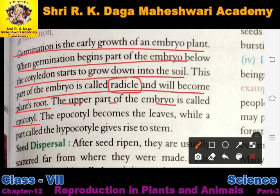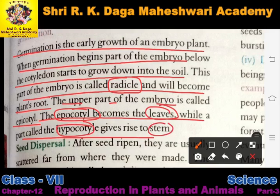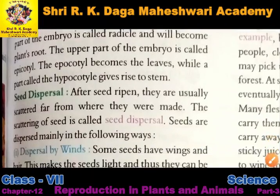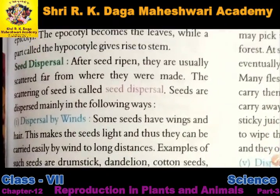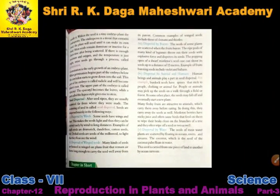The upper part of the embryo visible above the soil surface consists of two parts: the epicotyl, which becomes the leaves, and the hypocotyl, which gives rise to the stem. Is tarah se jo seeds hain woh germinate hokar ek plant ko birth dete hain.